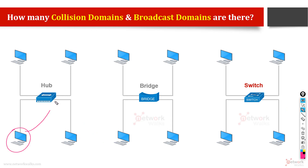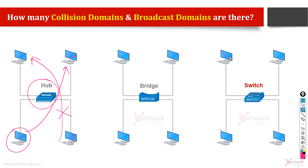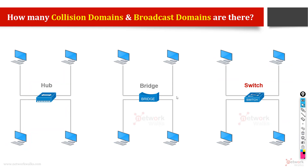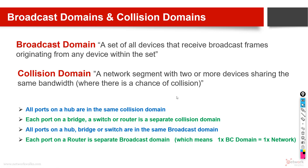This means that if device number 3 is sending a message to number 2, then number 4 cannot send to number 1 at the same time — because a hub has one collision domain. But this is possible with a switch. In the third picture, when device 1 wants to send a message to 4, at the same time device 2 can also send a message to 3. This is the concept of collision domains — each device on a switch has a separate collision domain, so there is no chance of collision.